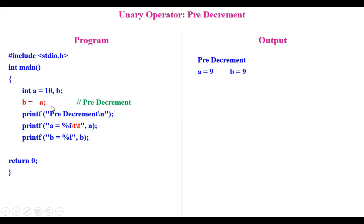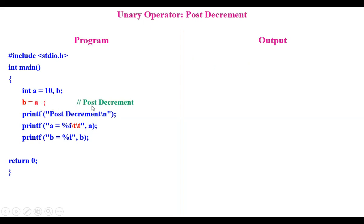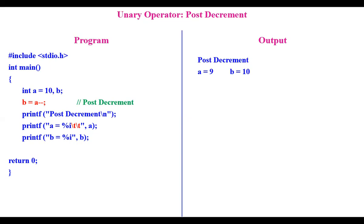Now post-decrement — the two minus signs are placed after the variable. Initially the value of a is 10, and that same 10 is assigned to b first. Afterwards the decrement operator changes the value of a to 9. So b equals 10 and a becomes 9 after the statement. Whether increment or decrement operators are post or pre must be handled very carefully.